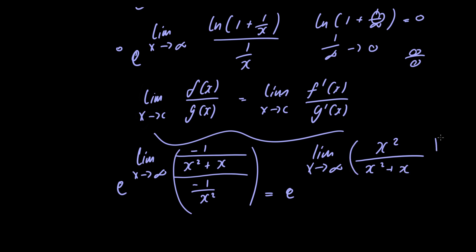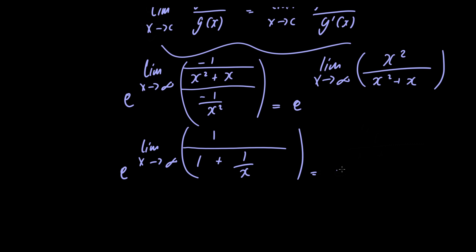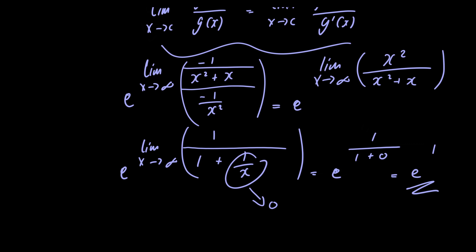We divide everything by the highest power, x squared, so that insignificant terms cancel as the limit approaches infinity. This gives e raised to the limit as x approaches infinity of 1 divided by 1 plus 1 over x. Evaluating the limit, we get e raised to 1 over 1 plus 0, since 1 over x approaches 0. This equals e raised to the first power — that is the final answer.